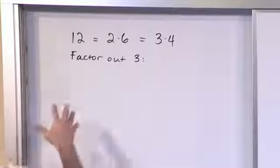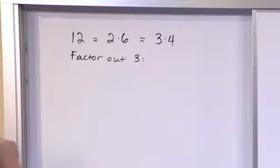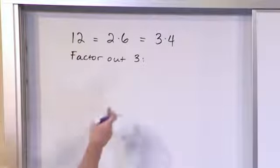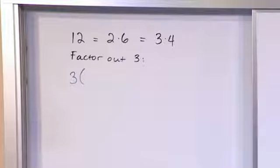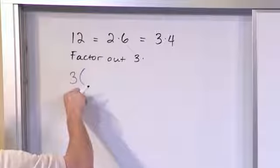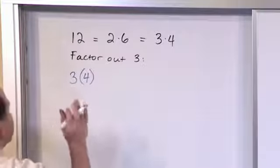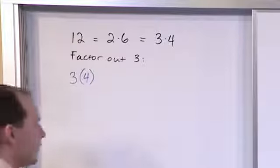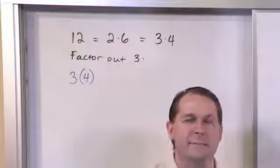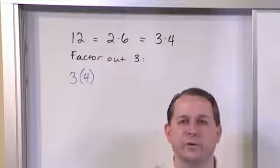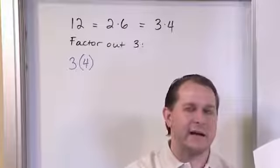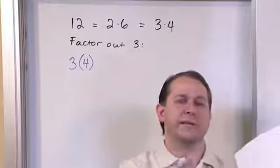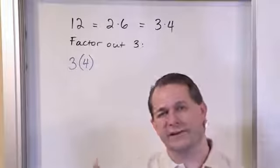If I pull out a 3 from 12, I write my 3 down with parentheses. What's left over if I pull out that 3? The only thing left is 4, because 3 times 4 is 12. When I say pull it out, I mean remove it and make the expression still equal 12. You pull it outside the parenthesis and whatever's left inside must multiply together to give you 12 back.